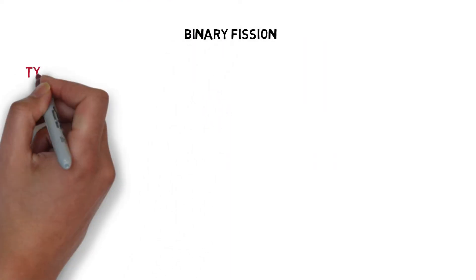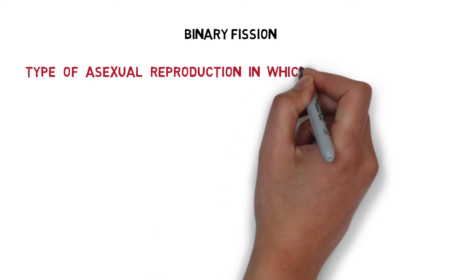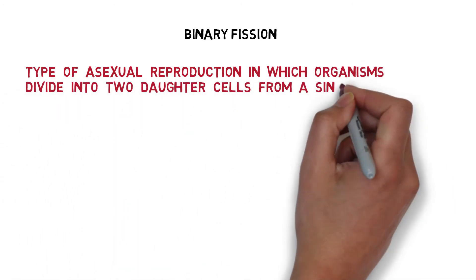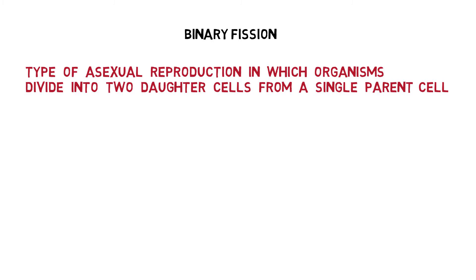Binary fission. Binary fission is a type of asexual reproduction in which organisms divide into two daughter cells from a single parent cell.